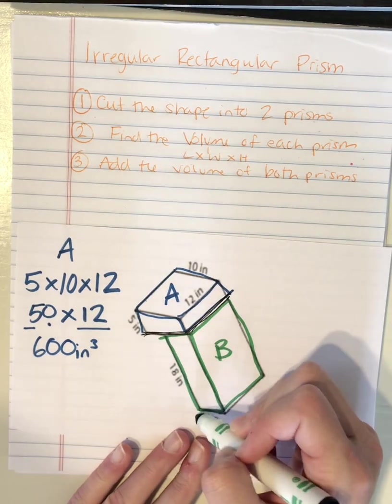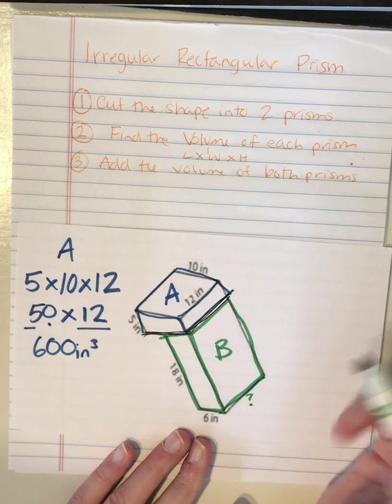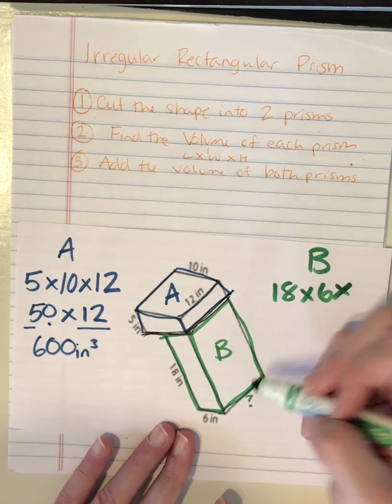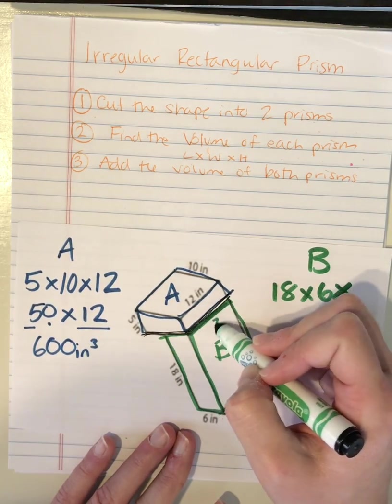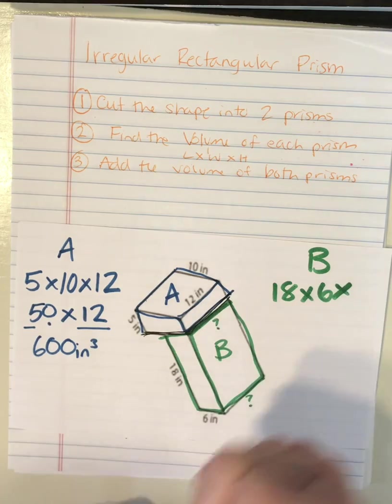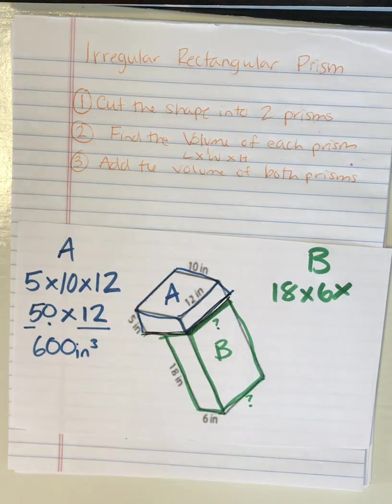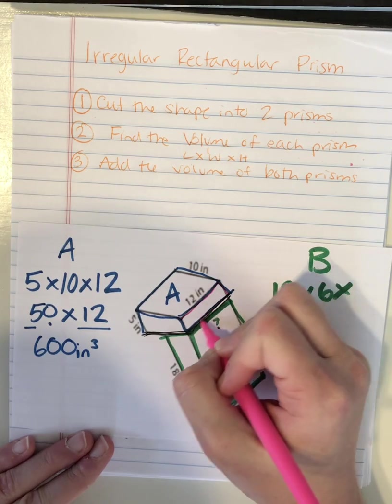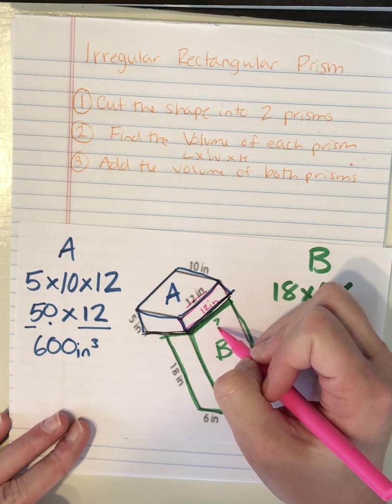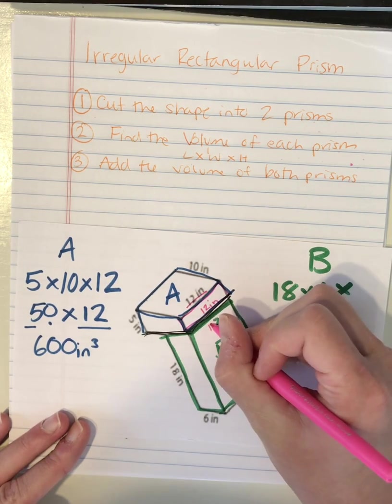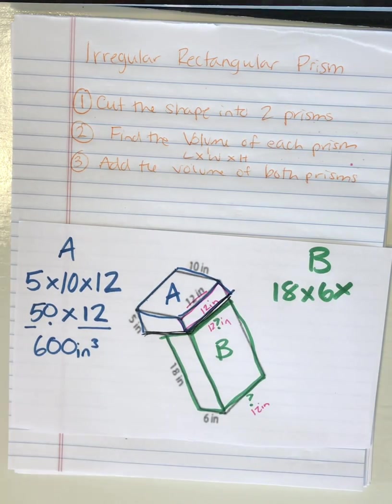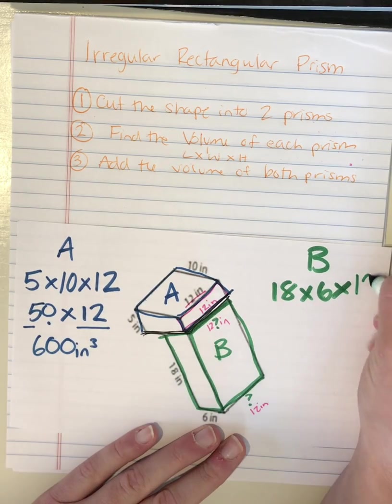And then here in green I see 18, 6, and I'm not quite sure what this one is yet. So here's B for 18 times 6 times... I look up here. This one doesn't have a number either. But this is the same as this. Because in this rectangle right here, I use my pink. If this is a rectangle and this side is 12, that means my opposite side is also 12. So I know that if this side is 12, my opposite side is 12 inches as well.